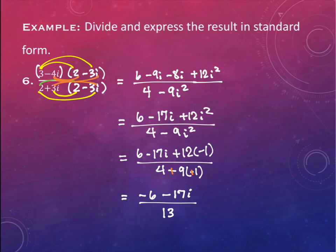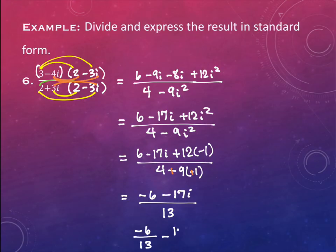Okay, what do we think? If MyMathLab bulks at this, it's wanting you to split it up. So you're going to do negative 6 over 13 and minus 17 over 13, and then there's an i on the end.